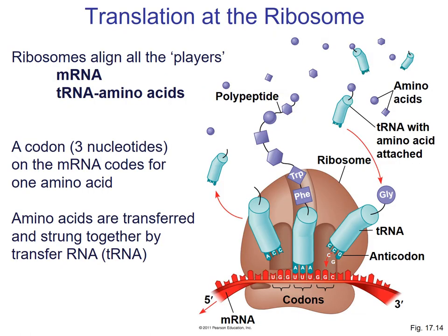Here's the ribosome — much more on ribosomes later. There are different ones for eukaryotes and prokaryotes: eukaryotes have 80S ribosomes, prokaryotes have 70S ribosomes. There are two subunits — a large subunit and a small subunit. You can see the messenger RNA in red, and the little structure is supposed to be a transfer RNA.